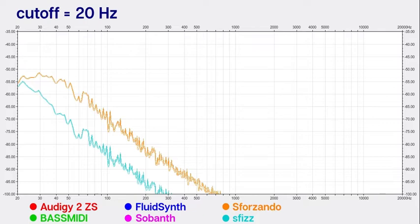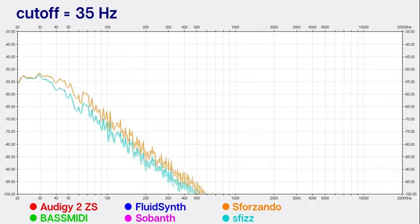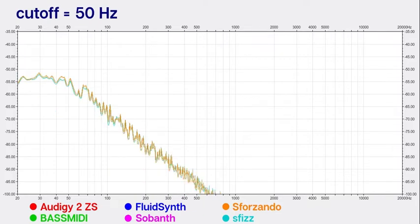This is because Sforzando doesn't actually support a cutoff frequency below 50 Hertz. So if I move this graph here to show 50 Hertz, you can see that the filter curves line up pretty identically.